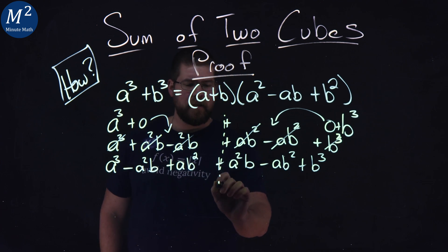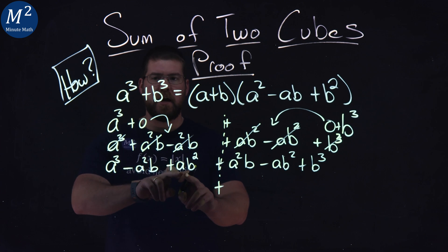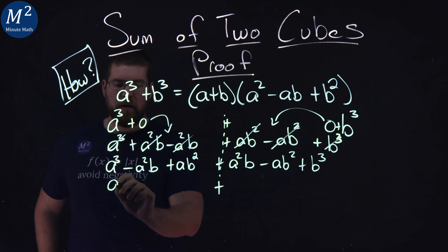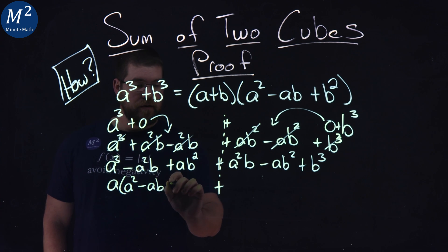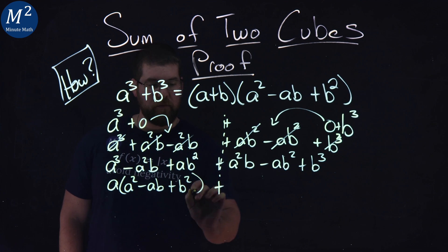Within this section, that plus side here, I'm going to pull out an a. I see a common a right here. I pull out an a and I'm left with a squared minus ab plus b squared, right there.